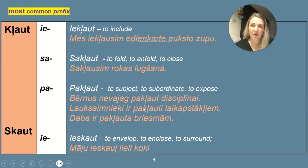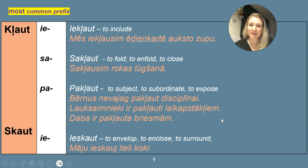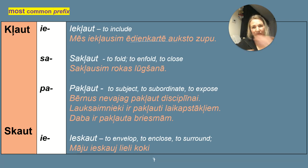The last two sentences use a perfect tense with the verb 'to be' plus the verb in a specific form that acts like an adjective — ir pakļauti, ir pakļauta — look at the endings, but still followed by dative forms. Skaut with the prefix ie: ieskaut means to envelope, to enclose, to surround. Māju ieskauj lieli koki — the house is surrounded by big trees.